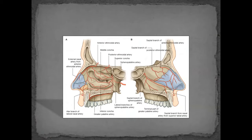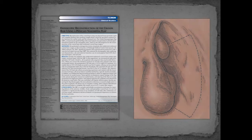The sphenopalatine artery is the end artery of the internal maxillary artery. In about 85% of cases it splits — usually into two branches before exiting the foramen. The major posterior branch is the posterior septal artery, and the one going to the front supplies the anterior and lateral nasal arteries.